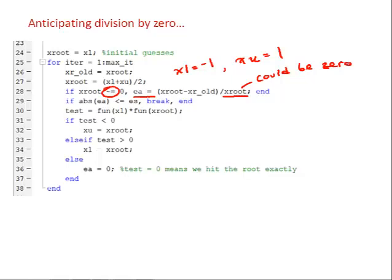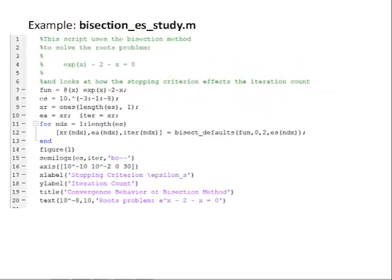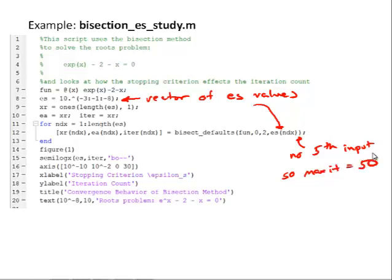So let's look at an example of what we can do with our new, more robust bisection method. And this is a study to look at the performance of the bisection method and see how does the number of iterations that are required to converge depend on that stopping criterion. So what this example does, and I would encourage you to download the m-file from the video folder and run this, perhaps run it in the debugger and make sure you understand how it's working. But basically we set up a vector of ES values, and then we're going to pass them one at a time as the fourth input to bisect_defaults.